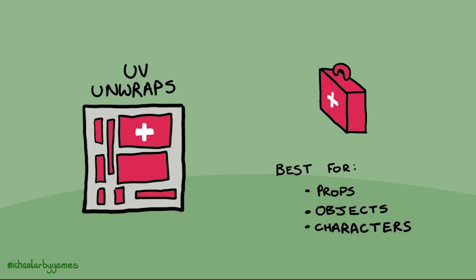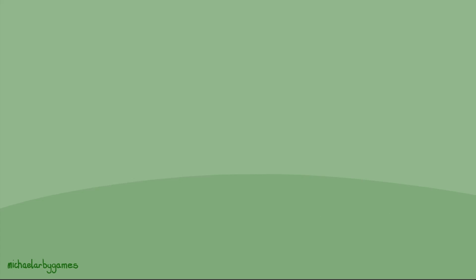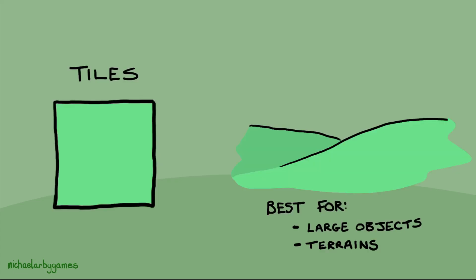The UV unwrap is best for individual characters, objects, and props. What we do is take those objects — like our little med kit here — chop them up into pieces, lay them out flat on our texture space, and paint them. That way they go in-game and the texture is wrapped back around the 3D object. They're best for small, single-use objects — one texture per object — and they're the most common thing you'll see.